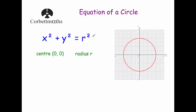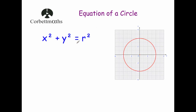So x² + y² equals the radius squared. Let's look at a question: find the equation of this circle. We know the equation starts with x² + y² because the center is the origin. The radius from the center to the edge is equal to 4, going from 0 to 4. So it equals the radius squared — 4² is 16 — giving us x² + y² = 16.